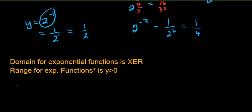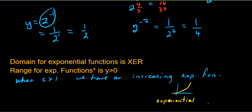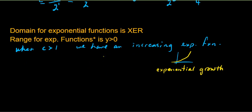Let's make some notes. When c is greater than 1, we have an increasing exponential function — this is what you hear called exponential growth. Examples include bank accounts, bacteria populations doubling, or grains of rice on the chessboard growing. That's exponential growth — that's when your c value is greater than 1.